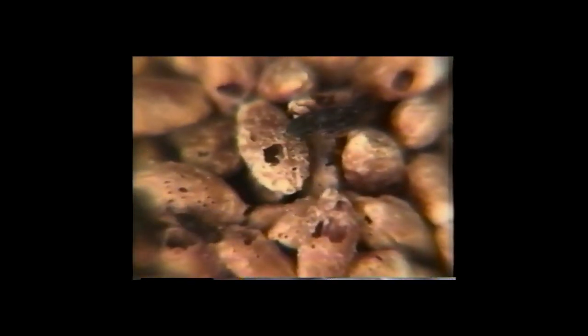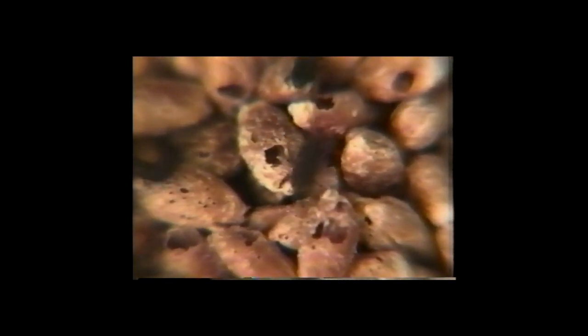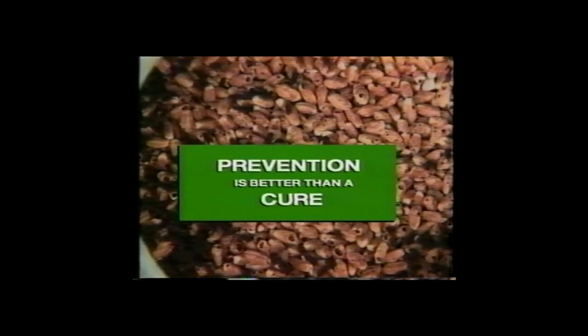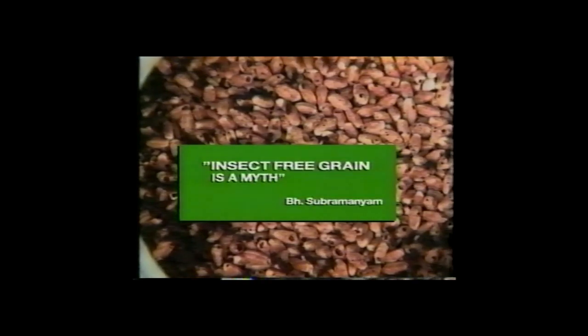One pair of insects can evolve from eggs to egg-laying parents in about 40 days. Each female will lay from 250 to 400 eggs in her lifetime. Stopping this process — prevention — becomes the key to preventing damage to the grain. Remember: prevention is better than a cure. Insect-free grain is a myth.